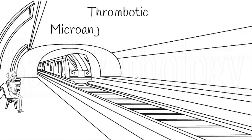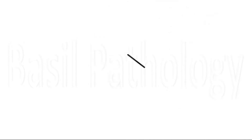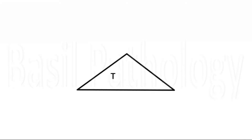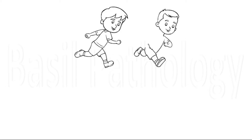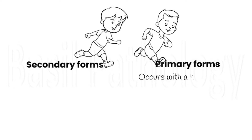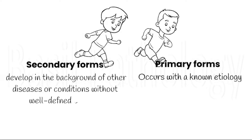First, about thrombotic microangiopathy and microvascular thrombosis. These diseases uniquely have a common triad: microangiopathy, hemolytic anemia, thrombocytopenia, and renal failure. There are two forms of thrombotic microangiopathies: primary forms and secondary forms. Primary forms occur with a known etiology. Secondary forms develop in a background of other diseases without well-defined etiology.